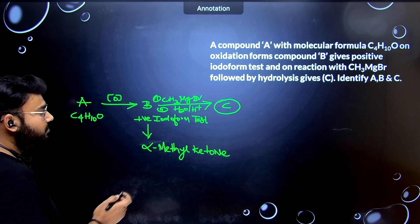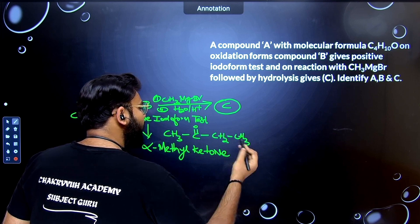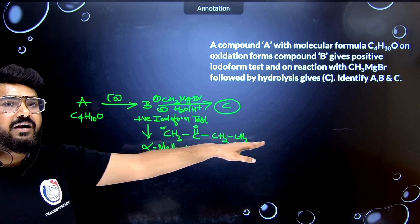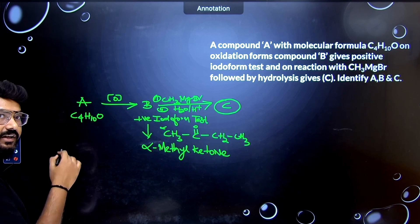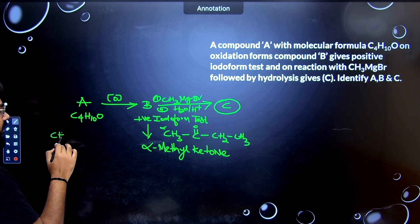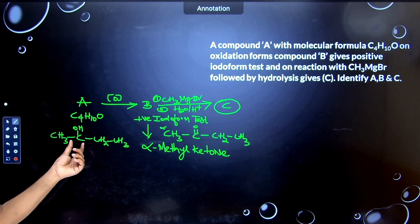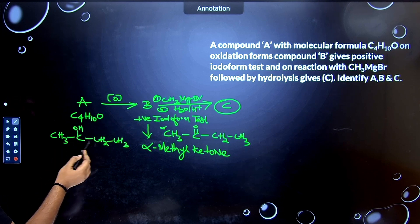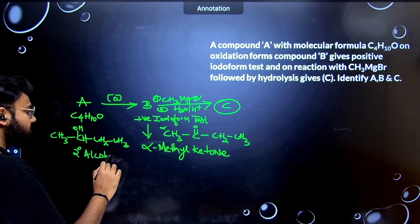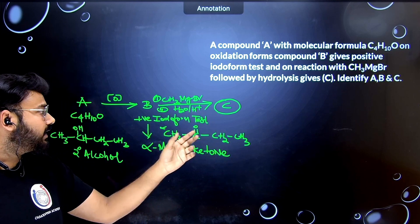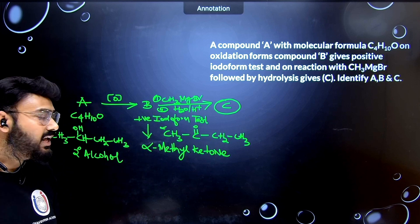This must be a second-degree alcohol, because oxidizing a secondary alcohol gives a ketone. With four carbons, the ketone B is CH3–C(=O)–CH2CH3 (butanone / methyl ethyl ketone) — it has an alpha methyl group confirming the iodoform test. Therefore compound A must be the corresponding secondary alcohol: CH3–CH(OH)–CH2CH3 (2-butanol), which perfectly matches the molecular formula C4H10O.